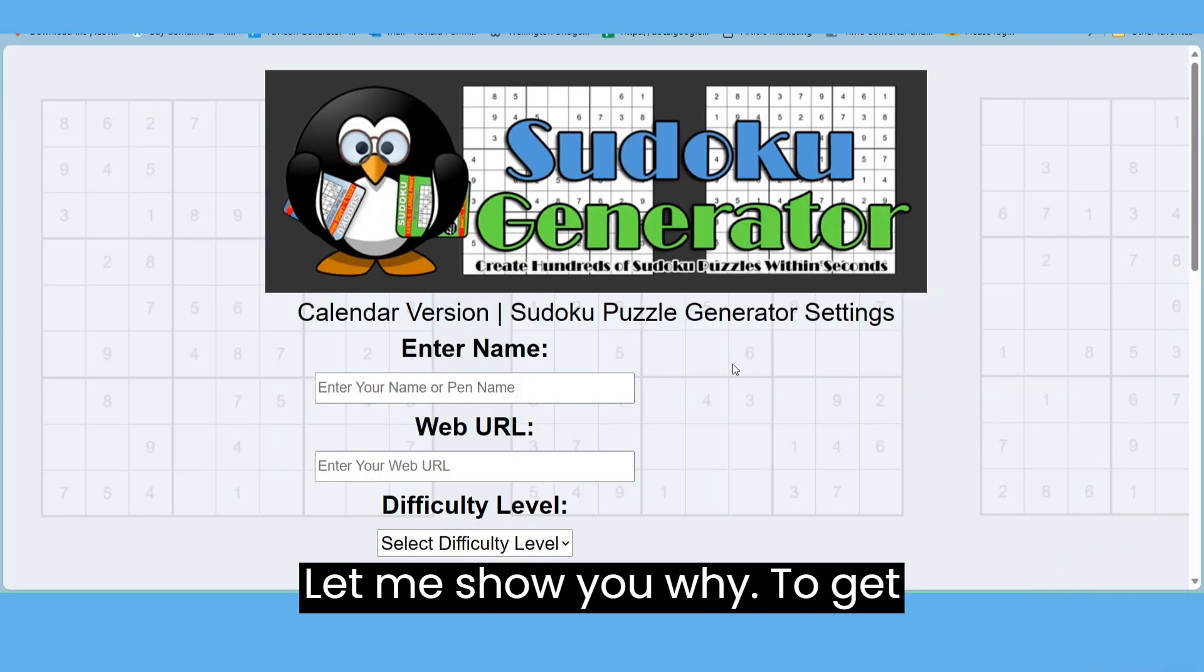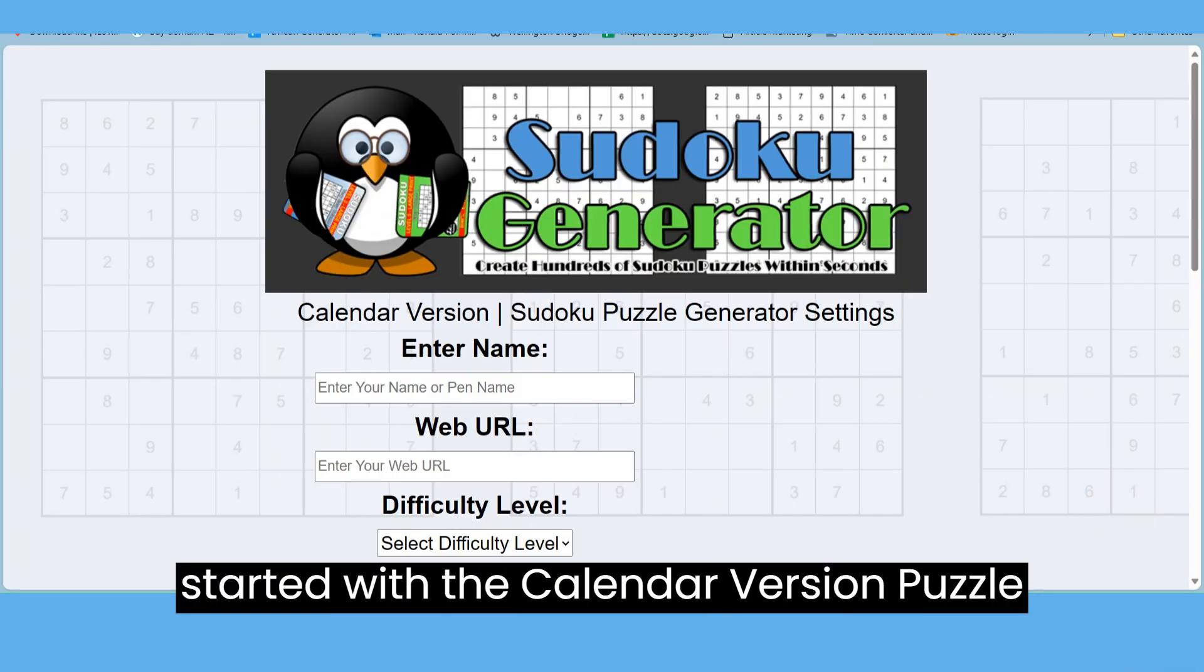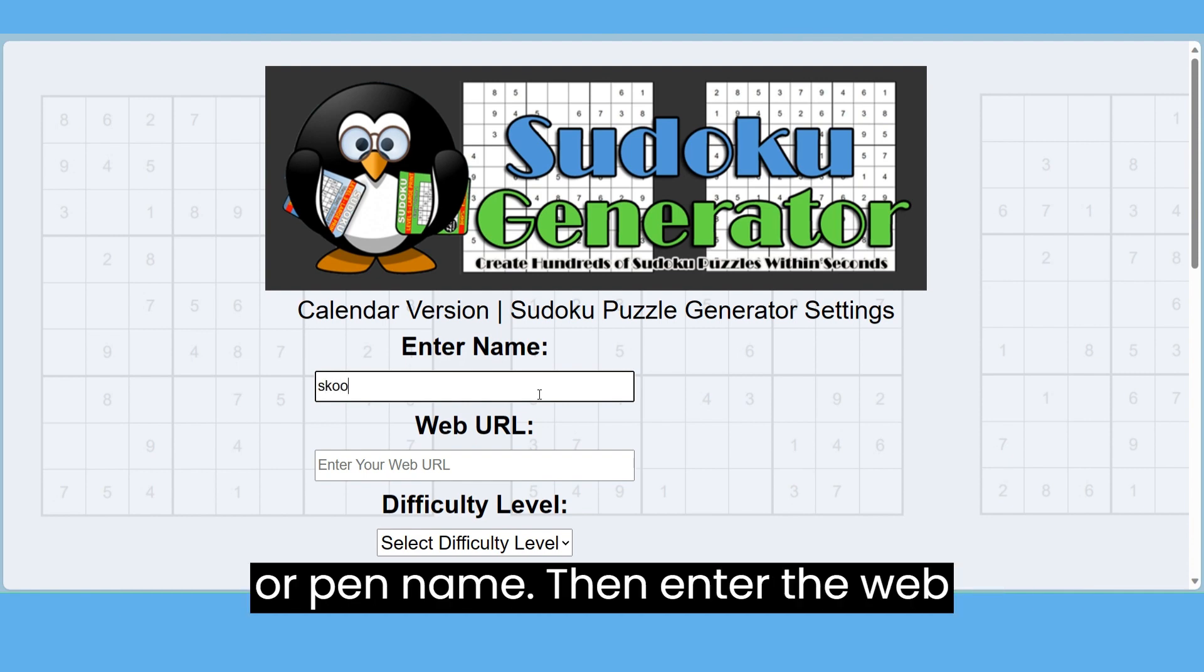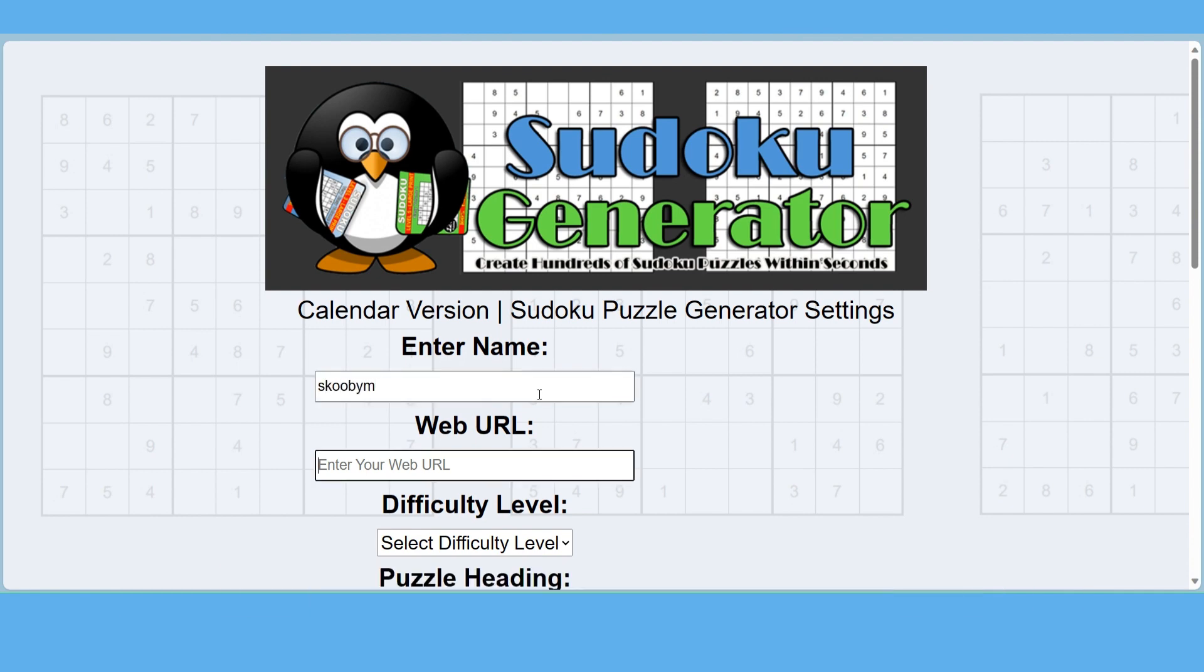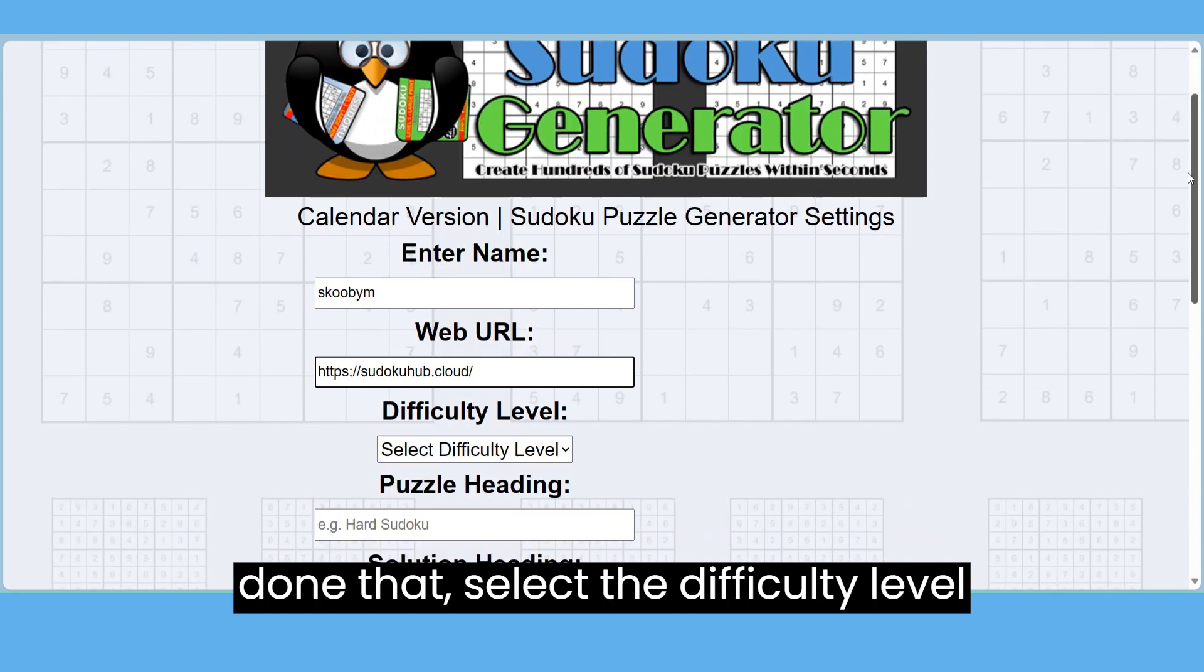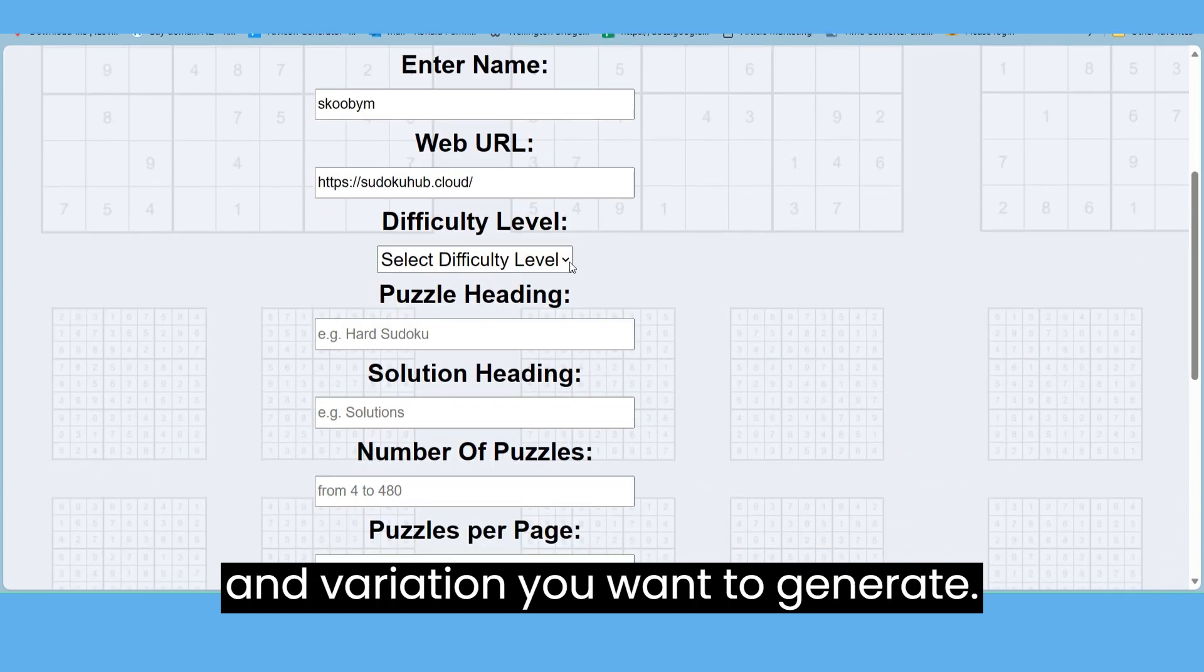To get started with the calendar version puzzle generator, enter your name, company name, or pen name. Then enter the web URL you are promoting. Once you've done that, select the difficulty level and variation you want to generate.